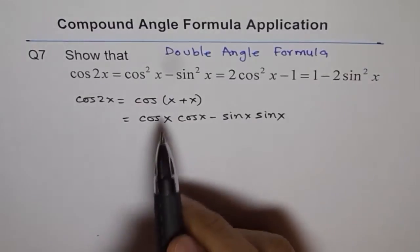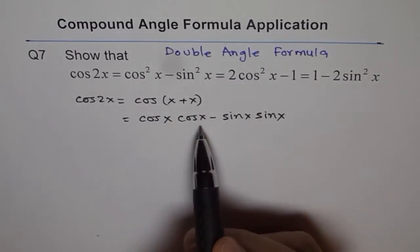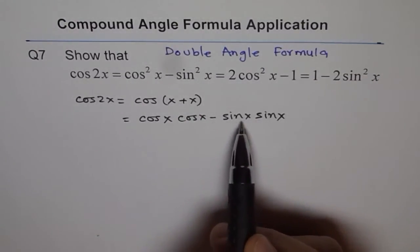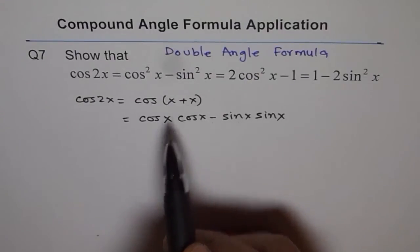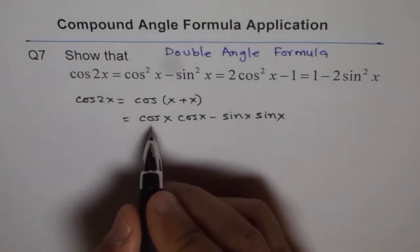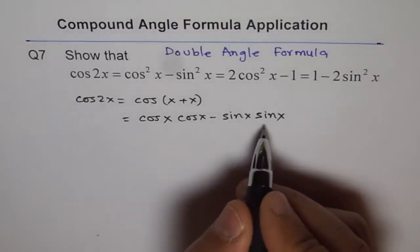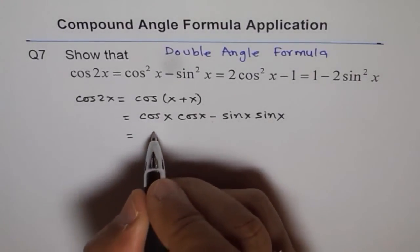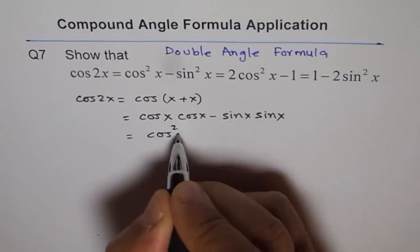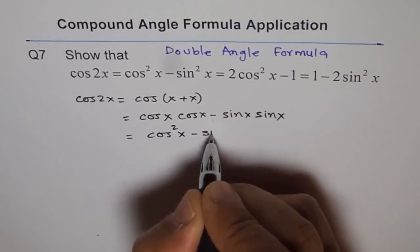You know, cos a plus b is cos a cos b minus sin a sin b. But here both a and b are same and therefore, we get cos x cos x minus sin x sin x. And that gives us the first form which is cos square x minus sin square x.